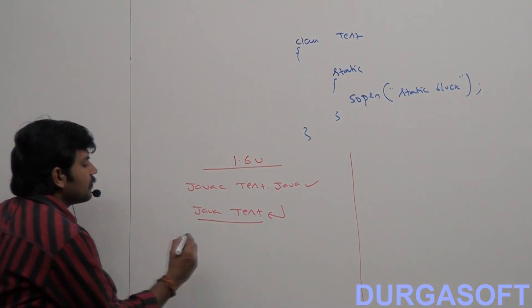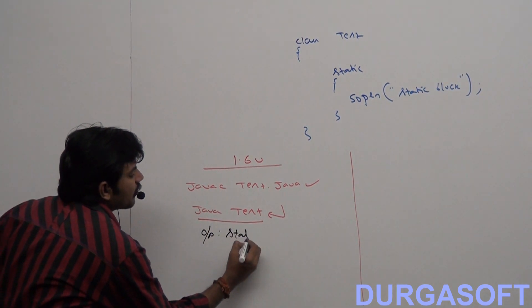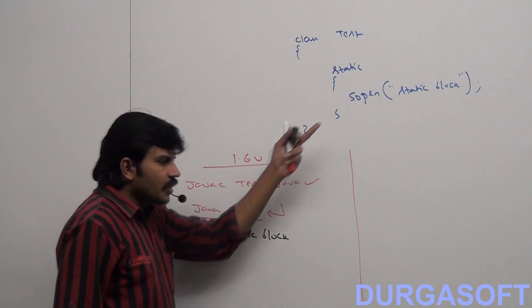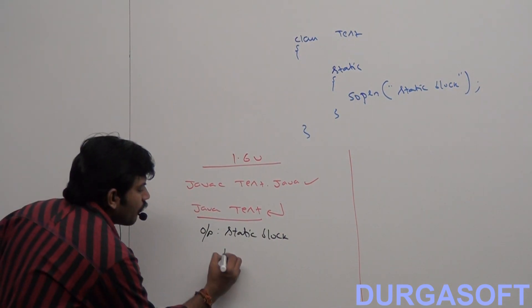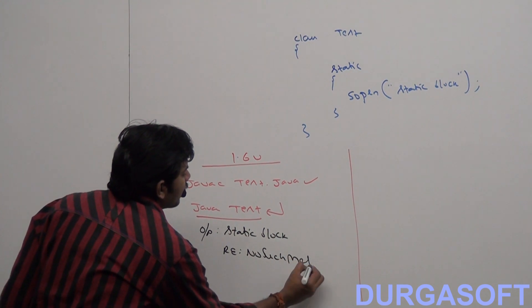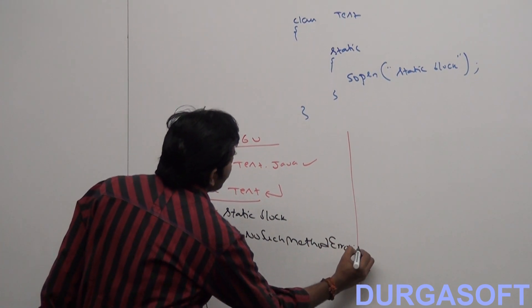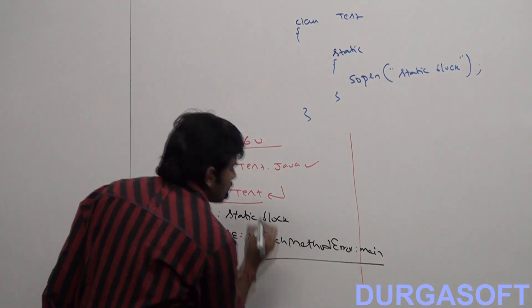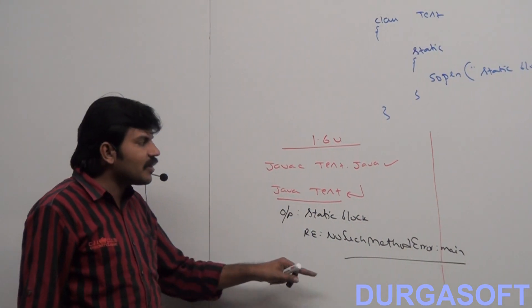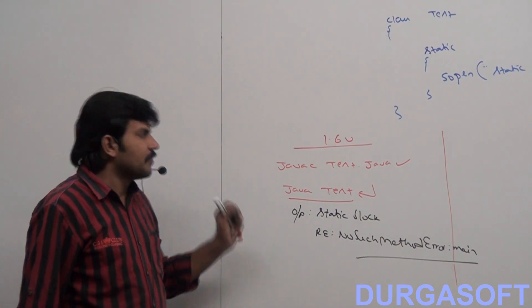So the output will be: the static block is executed first, and after that, since the main method is not there, we get NoSuchMethodError colon main.